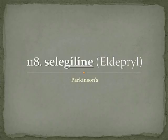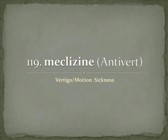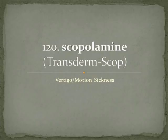Moving on to vertigo and motion sickness: meclizine is Antivert — a great brand name, literally antivertigo. Scopolamine is Transderm Scop, which literally means trans (across) and derm (skin) — you're taking scopolamine and putting it across the skin. This has anticholinergic effects, so you will see some dry mouth and things like that.